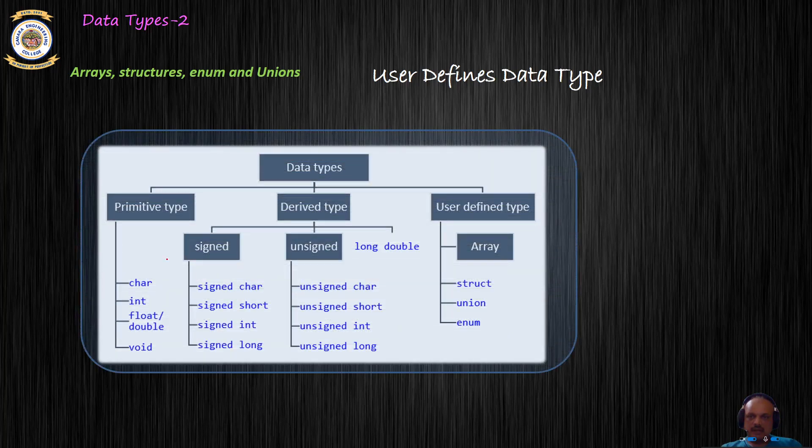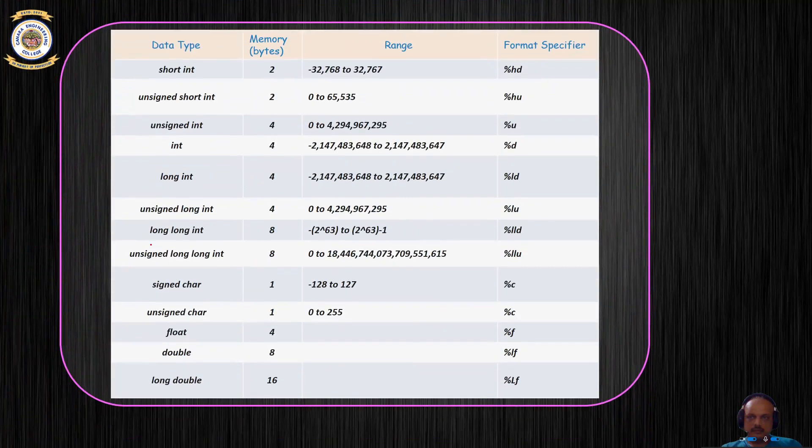The given chart basically summarizes the type of primitive data type or primary data type, derived data type, and user-defined data type that are readily available in C.